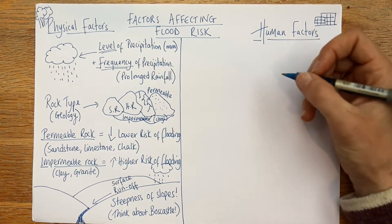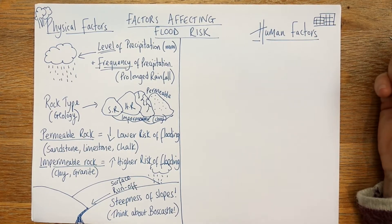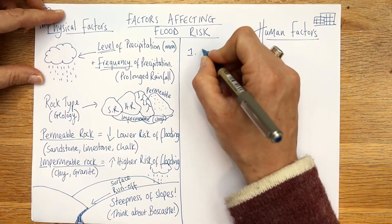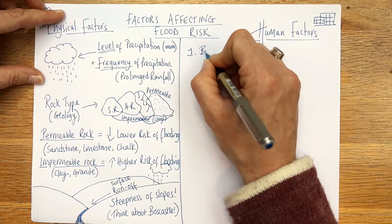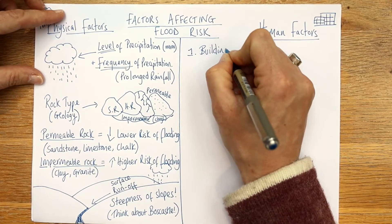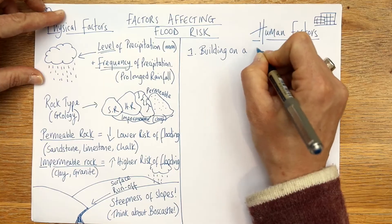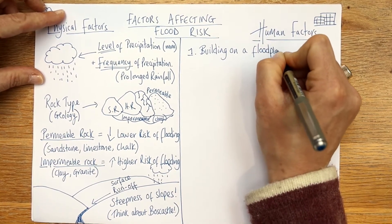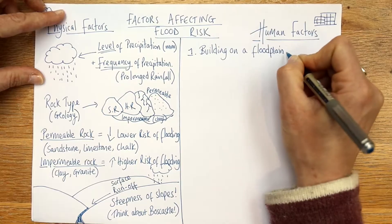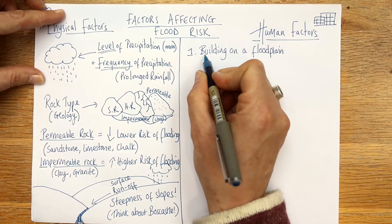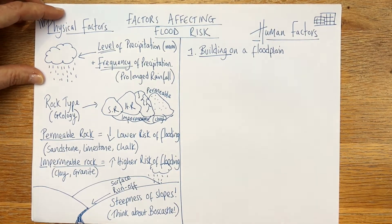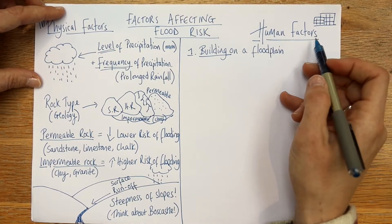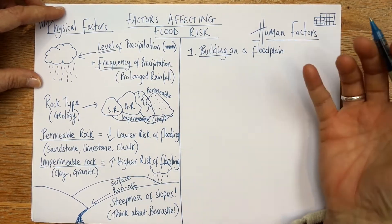On the right-hand side we have our human factors. The first one is building on a floodplain. This is things humans have done and built.